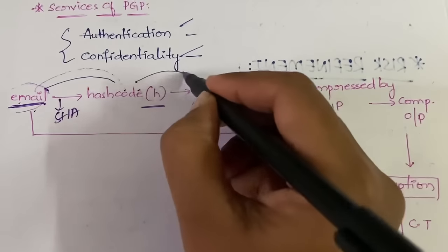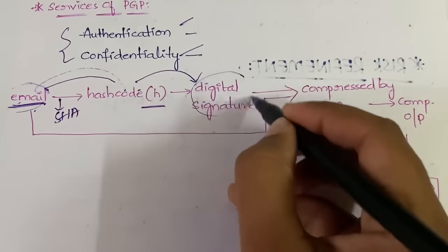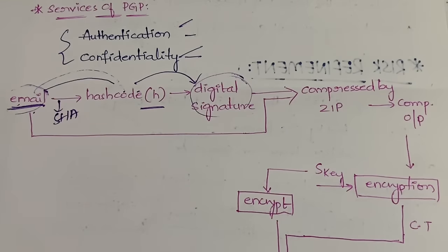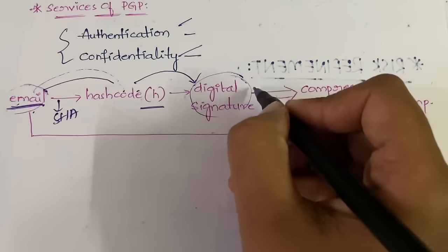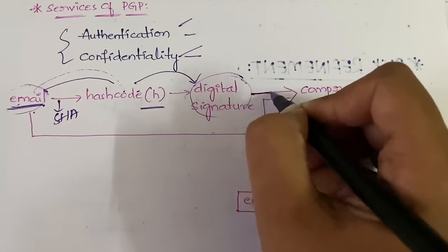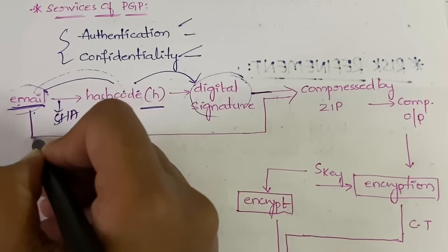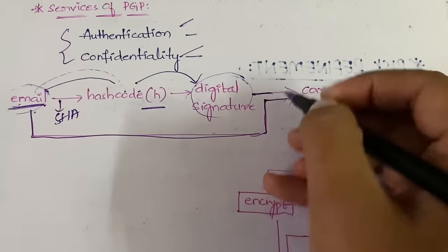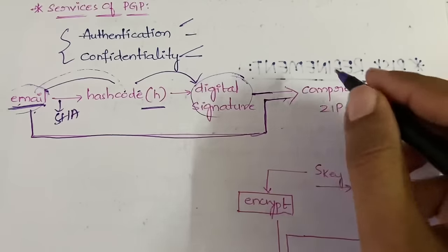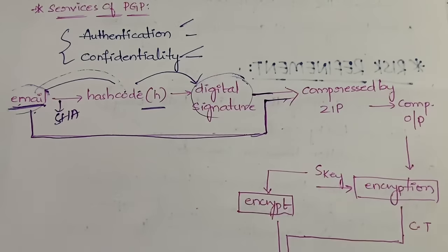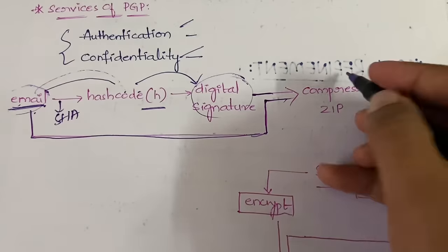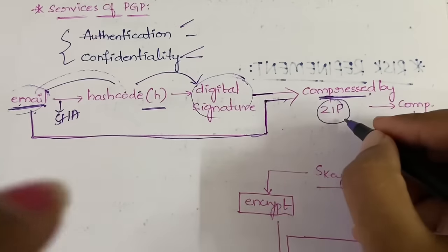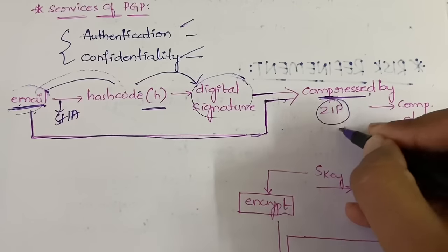The hash code is then converted into a digital signature to verify authenticity. This digital signature and the original email are then combined — concatenated together — and compressed using ZIP, denoted by Z.